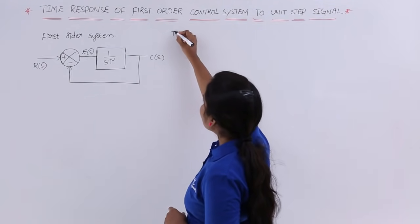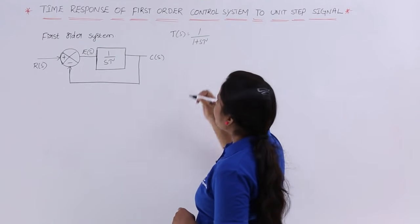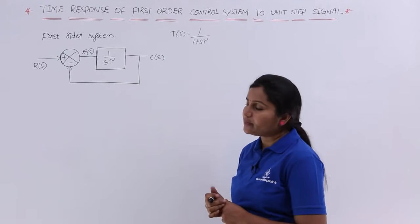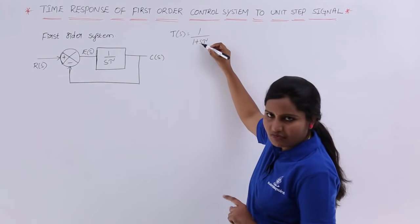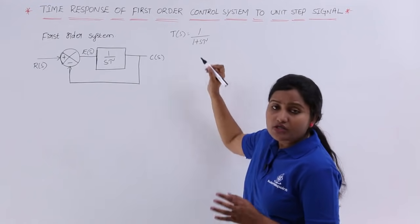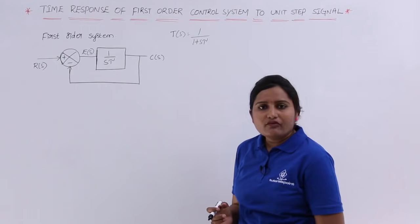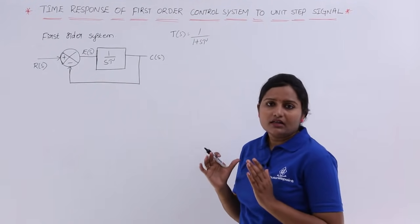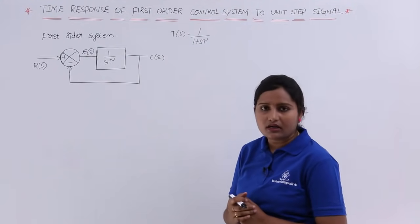The first order transfer function T(s) is equal to 1 divided by (1 + s·τ). This is the basic transfer function of a first order control system. In this transfer function, the maximum power of S in the denominator polynomial is 1, so we confirm this is a first order system transfer function.